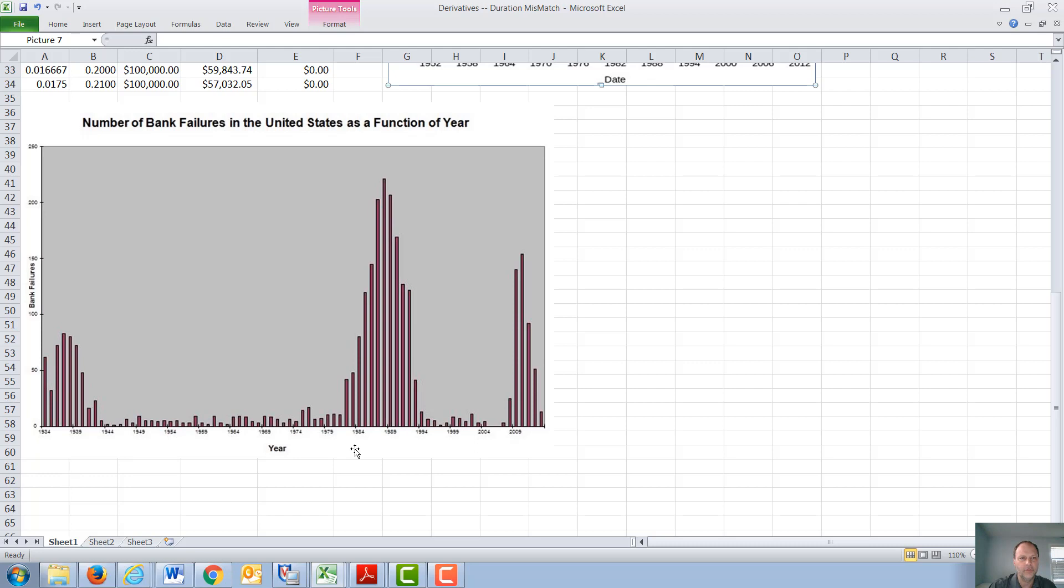This graph shows the year and the number of bank failures. You can see a large number of bank failures during the Great Depression and also a large number of bank failures during the recent financial crisis. The savings and loan fiasco was this large number of bank failures that occurred in the late 1980s and early 1990s.